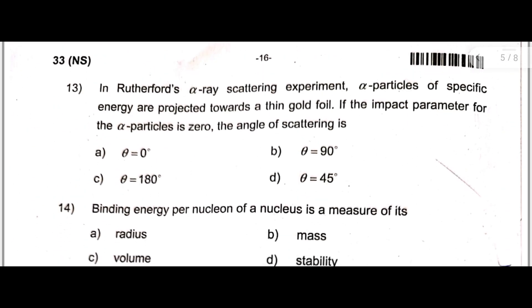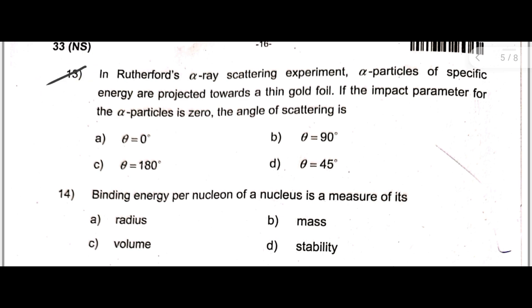Next, thirteenth question is: In Rutherford alpha ray scattering experiment, alpha particles of specific energy are projected towards a thin gold foil. If the impact parameter for alpha particles is zero, the angle of scattering is - here the correct answer is C: θ = 180 degrees.